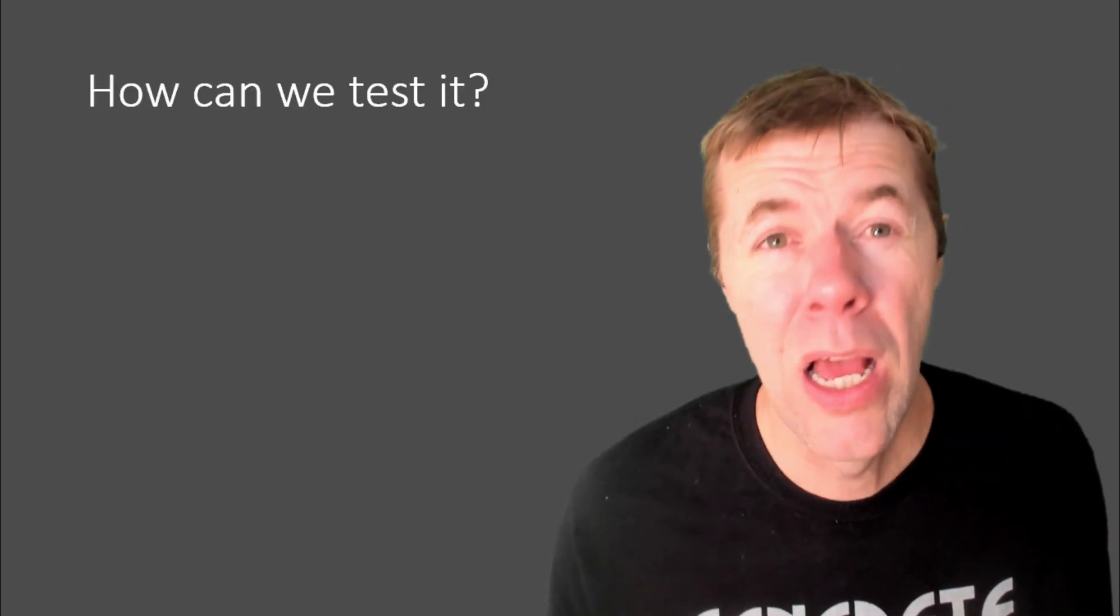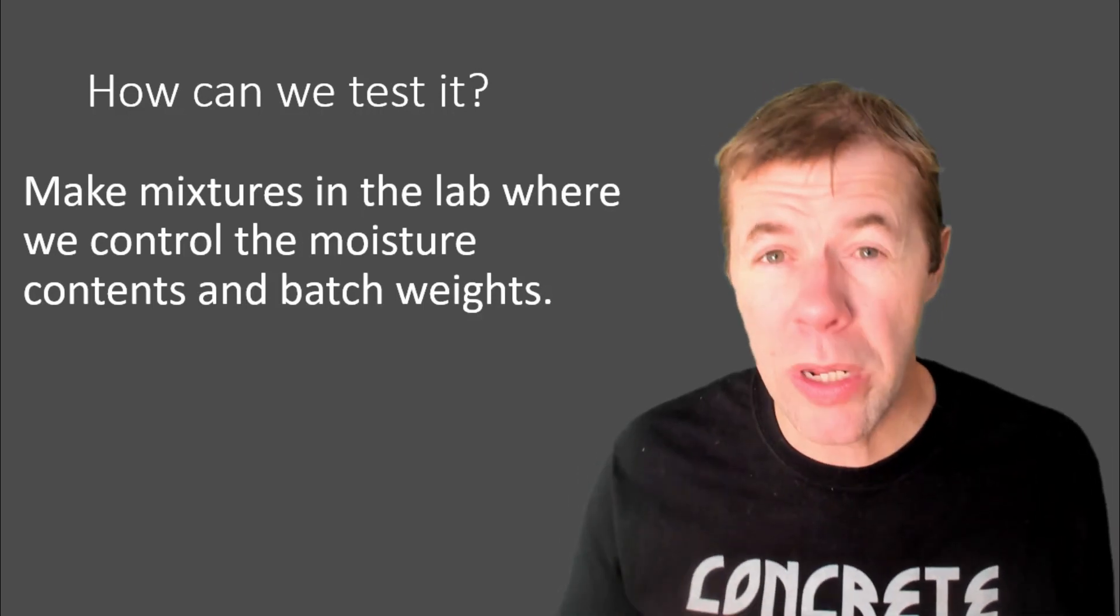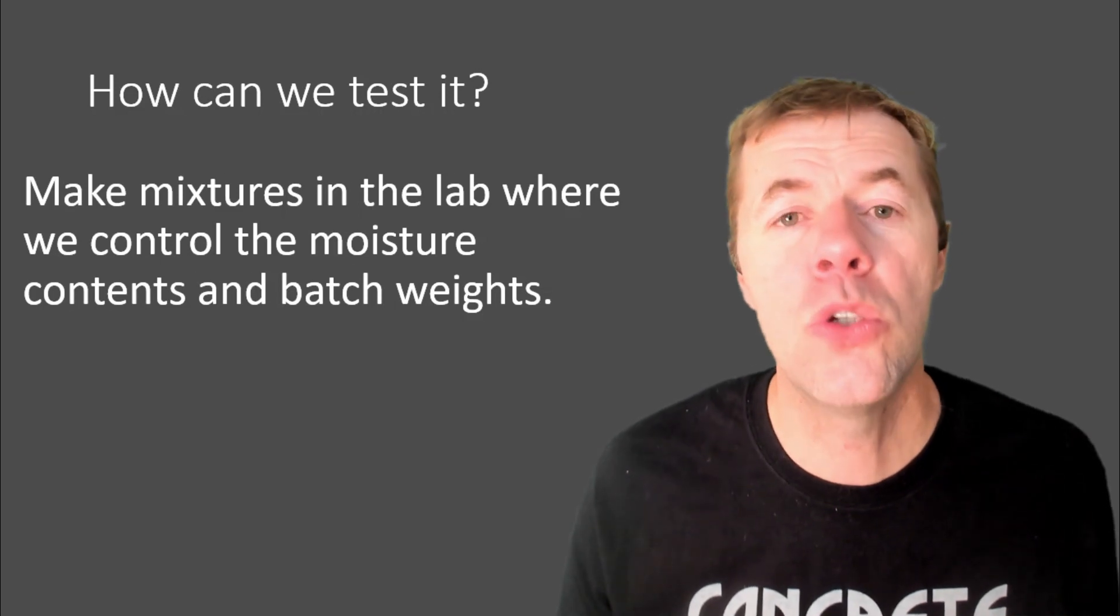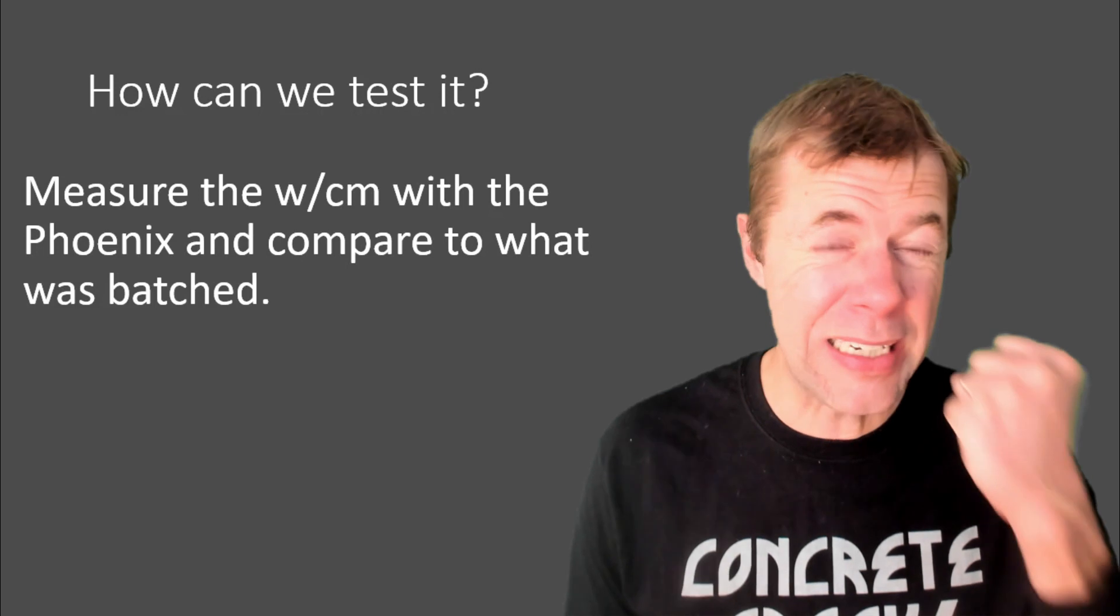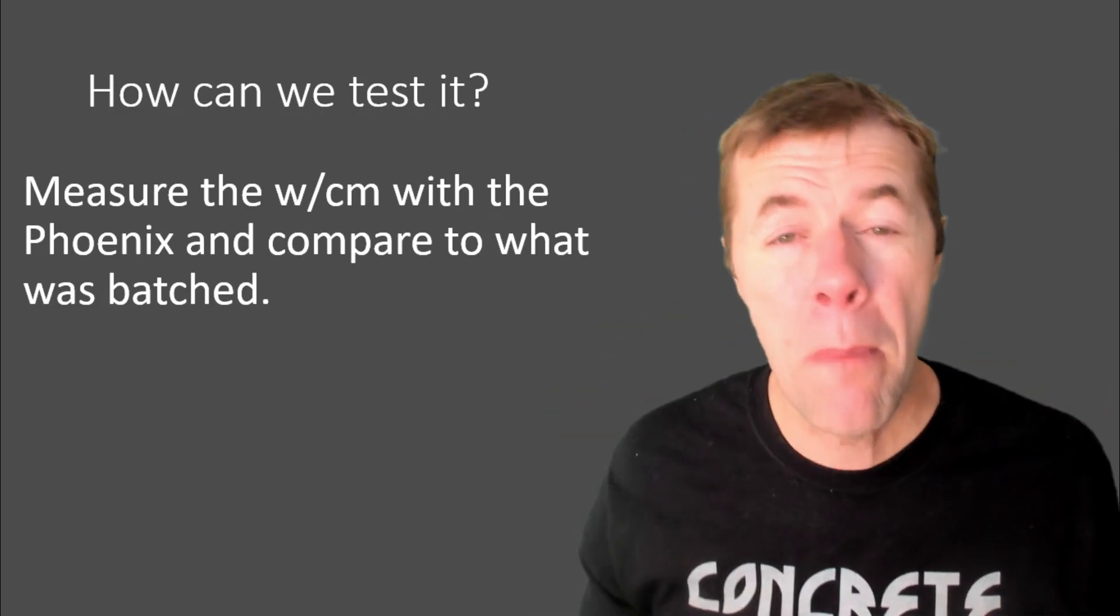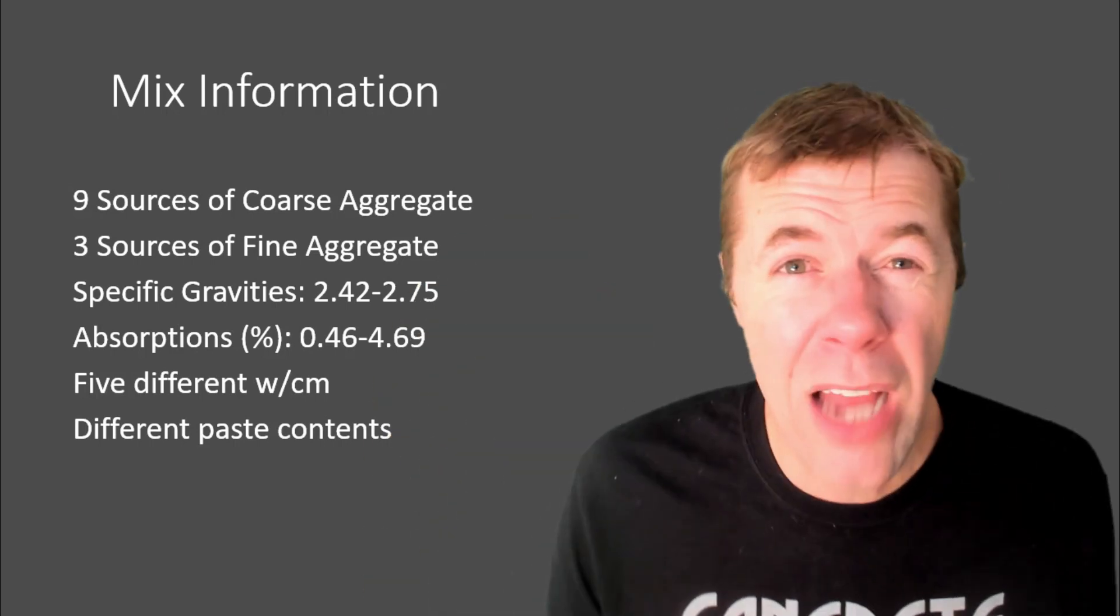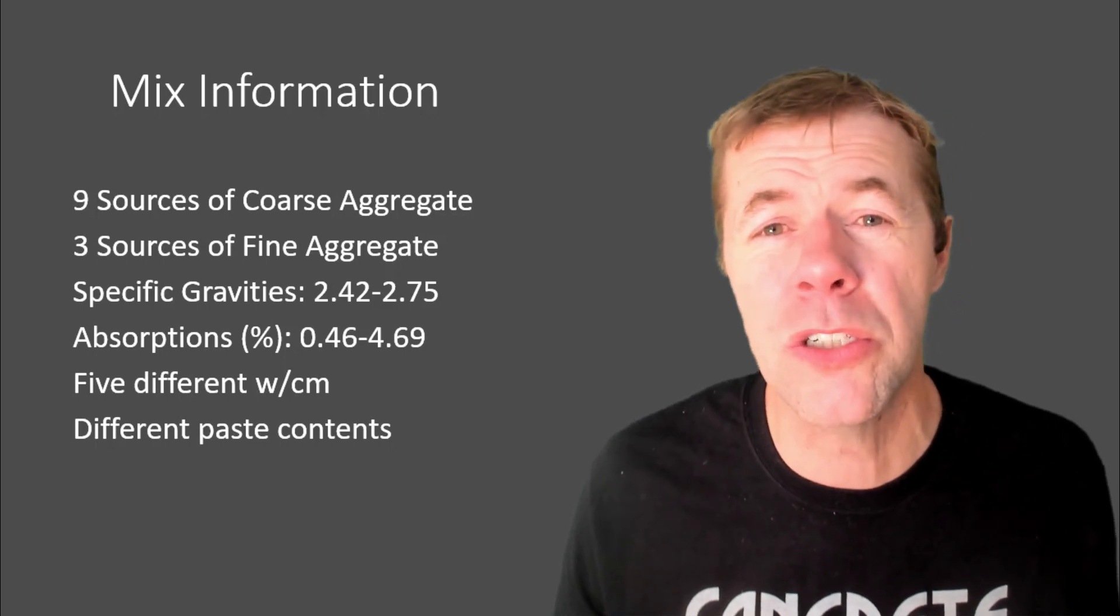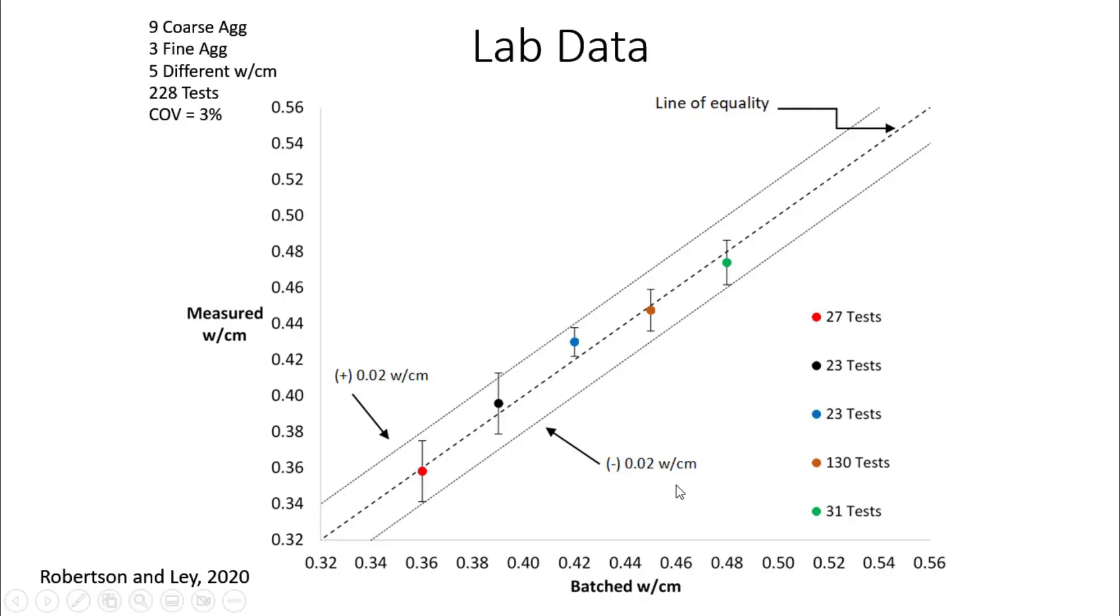How in the world can we test this? We're going to make mixtures in the lab, where we carefully control the weights of everything and the moistures, and then we're going to measure it with the Phoenix. So, we have an ideal weight, ideal water-to-cement ratio, then we have the Phoenix measured water-to-cement ratio, and we compare them. We did this for a ton of different aggregates, different specific gravities, different absorptions, different water-to-cement ratios, different paste contents, and the data looks like this. On the batch, this is what we think is in the concrete on the x-axis. This is what we measured in the concrete on the y-axis. And this perfect diagonal line here would be line of equality, perfect agreement. And these are plus or minus 0.02. That is about the variation in the test method. Each one of these data points is a lot of data points. That's 31, that's 130 different measurements.